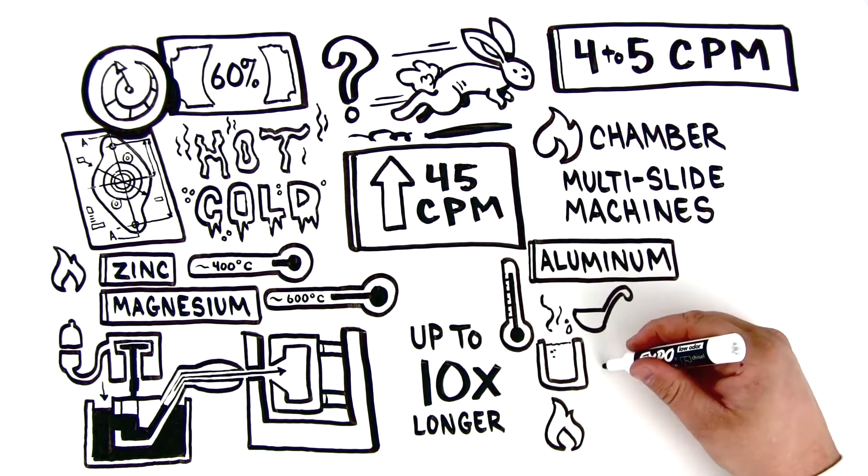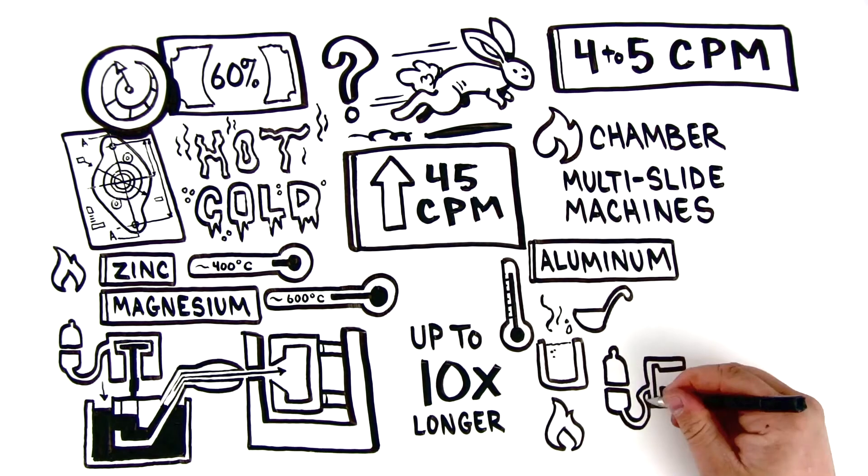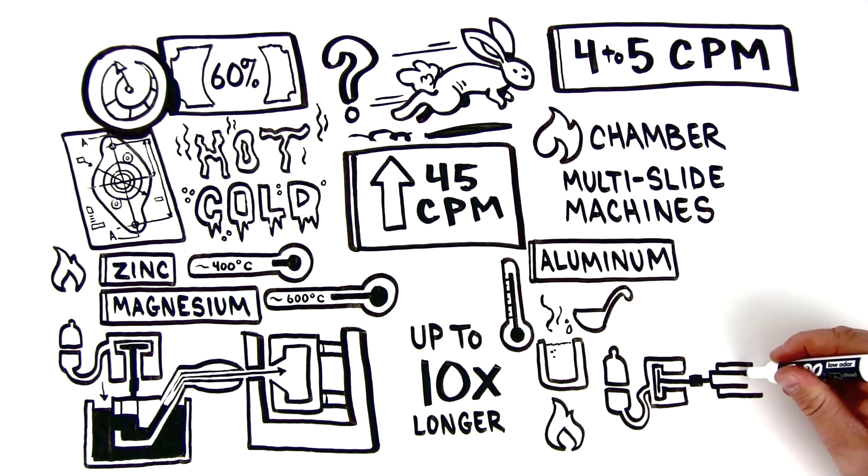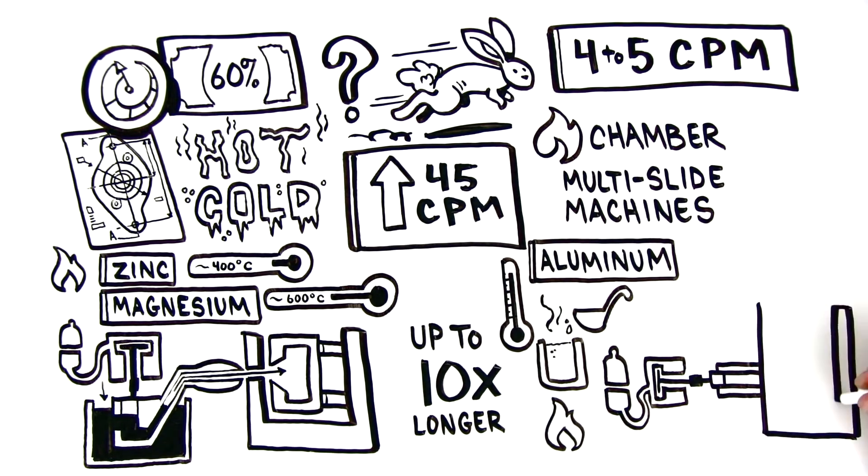Unlike the injection mechanism of the hot chamber process, with cold chamber, we have to ladle the molten metal from the melting pot into the shot sleeve. From there, a hydraulic plunger forces the metal into the die cavity.